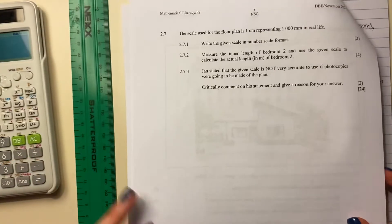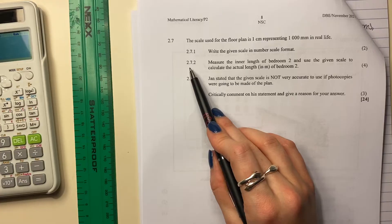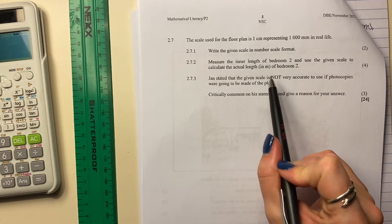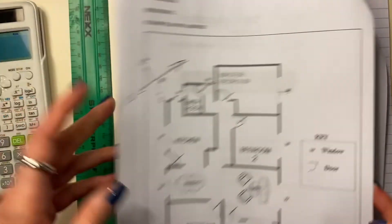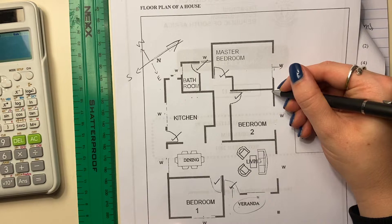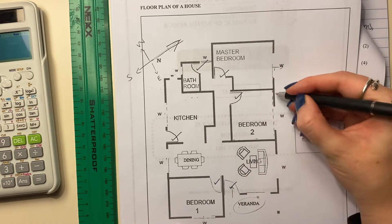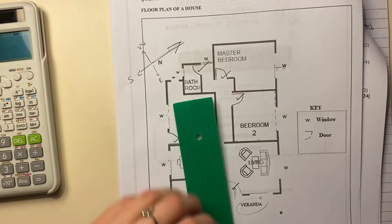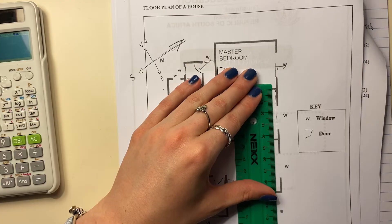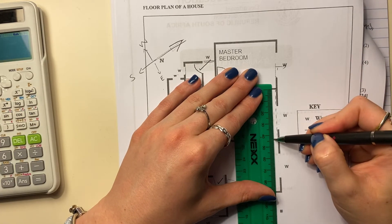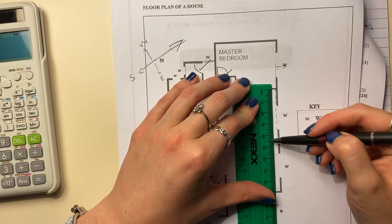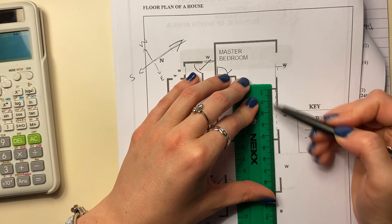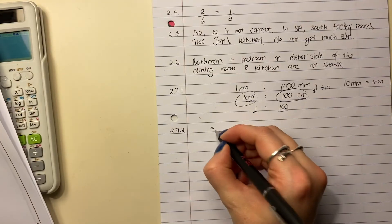Let's continue. We're almost done. Jan stated that the given scale is - oh, sorry, I'm reading the wrong question. Be careful not to do that. And 2.7.2, measure the inner length of bedroom two and use the given scale to calculate the actual length in meters of bedroom two. So here's bedroom two. So remember that this is length here, and that's width. So we're looking at this here. Make sure you get your ruler. I'm just going to do it here. No, I'm going to do it in millimeters. And we do it in millimeters. So let's measure it. So I'm thinking it is 4.4. So you see that it's 44 millimeters, but I want it in centimeters because we just spent the whole of the previous question looking at centimeters. So if it's 44 millimeters, it's going to be 4.4 centimeters. So it's 4.4 centimeters.